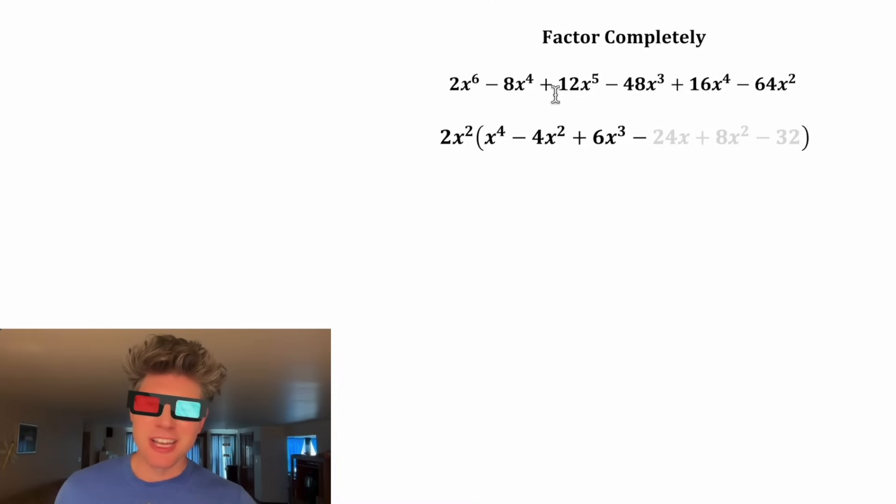And then we're gonna subtract 48 divided by two is 24, and x cubed divided by x squared is x. And then we're gonna add 16 divided by two is eight, and x to the fourth divided by x squared is x squared. And then for the last one, 64 divided by two is 32, and x squared divided by x squared is one.